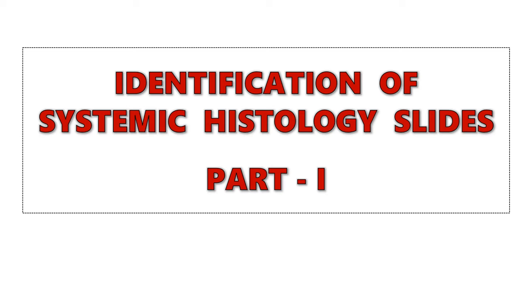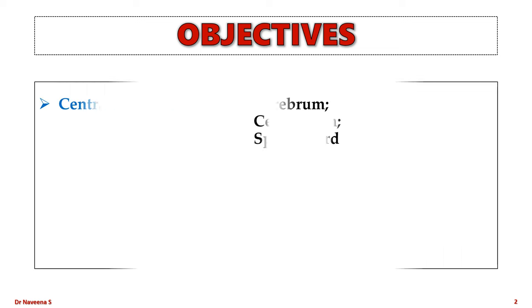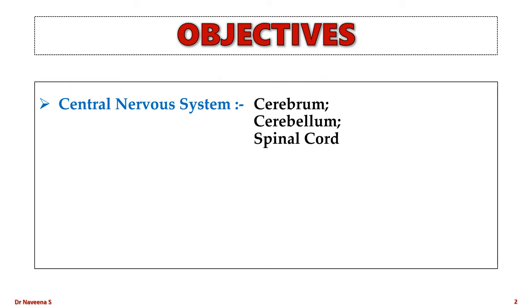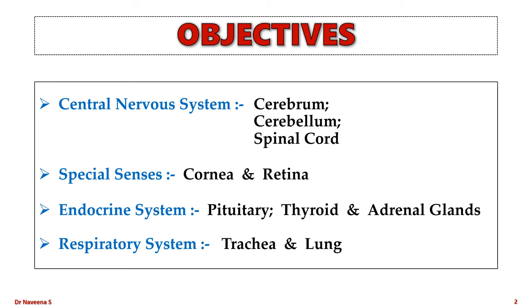Welcome to this video tutorial on identification of systemic histology slides, part 1. We will learn the following slides: three slides of the central nervous system — cerebrum, cerebellum, and spinal cord; two slides of special senses — cornea and retina; three slides of the endocrine system — pituitary, thyroid, and adrenal glands; and two slides of the respiratory system — trachea and lung. In total, we will be looking into 10 systemic histology slides.